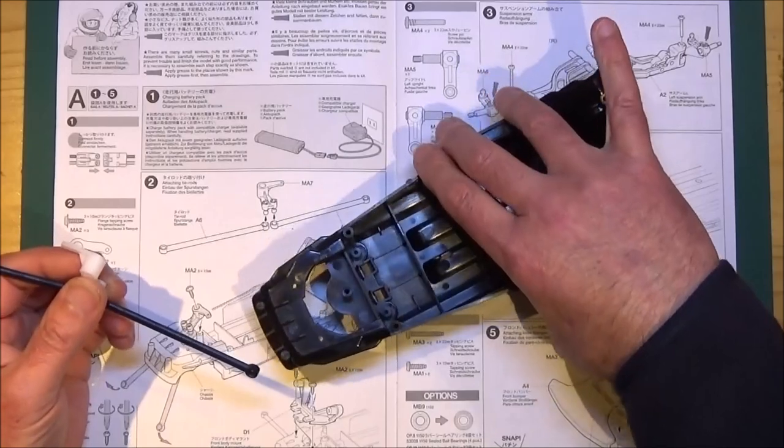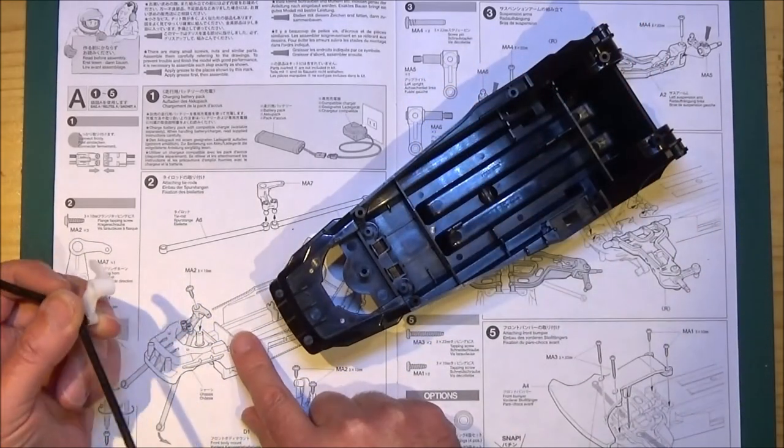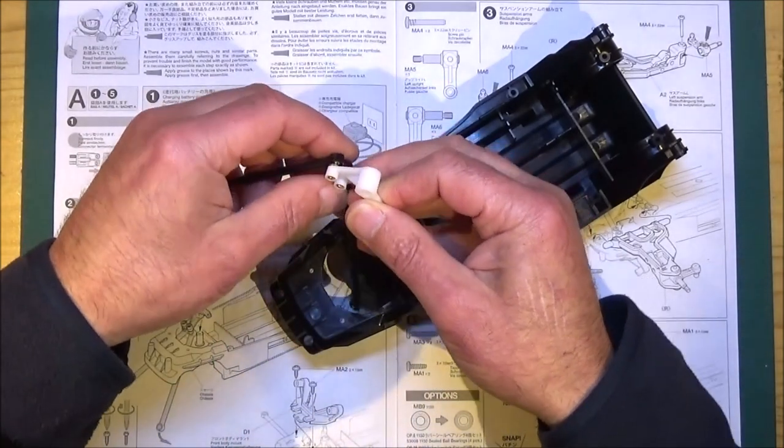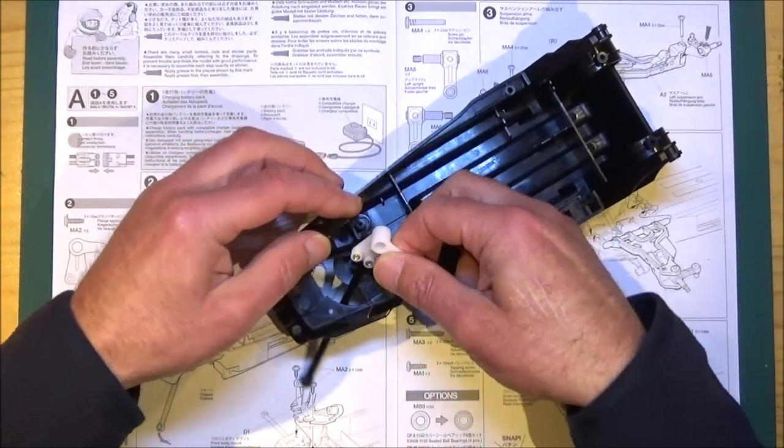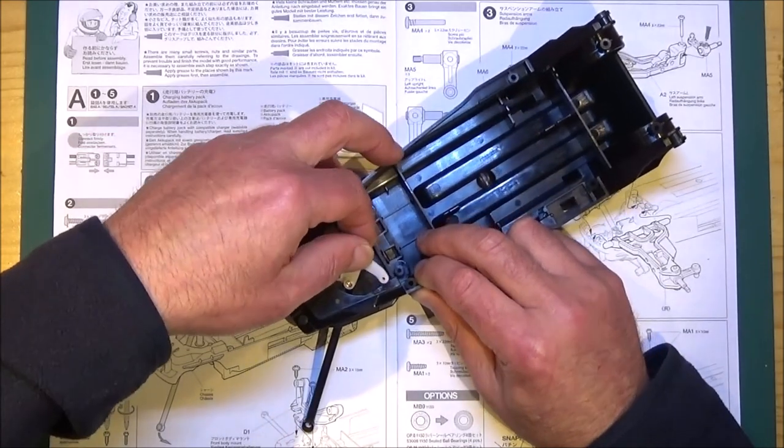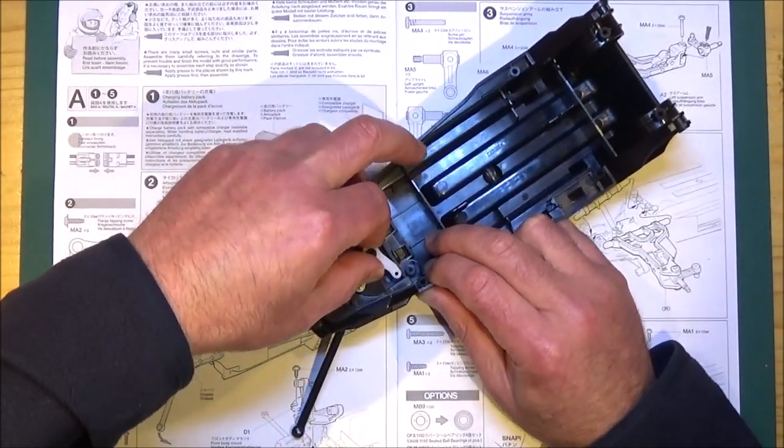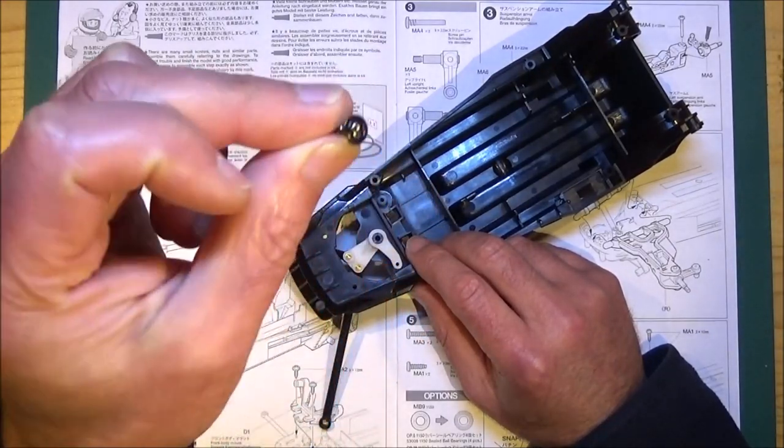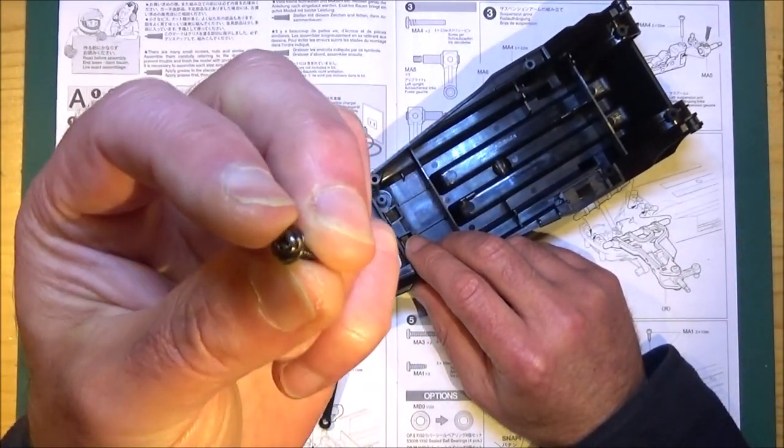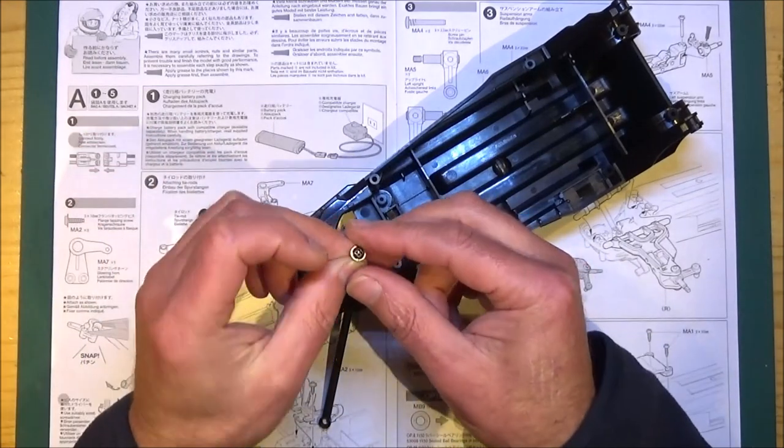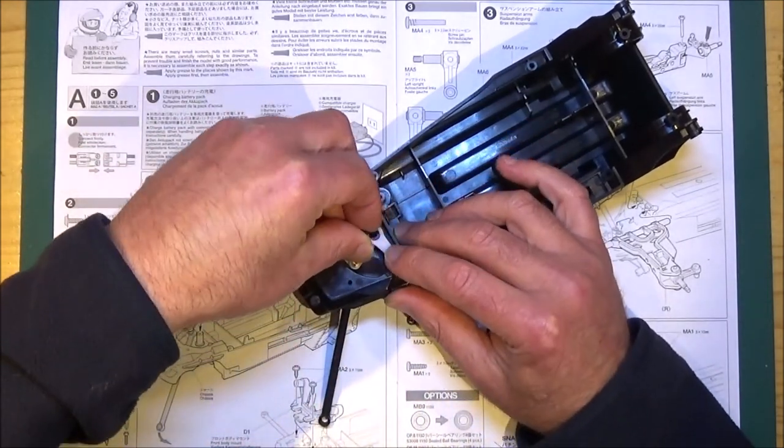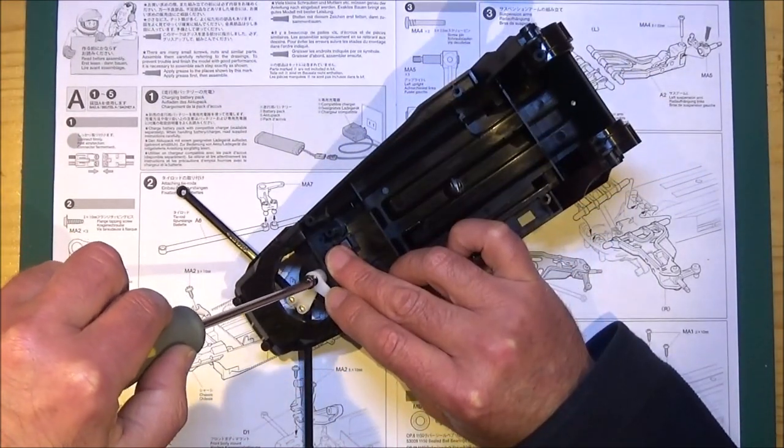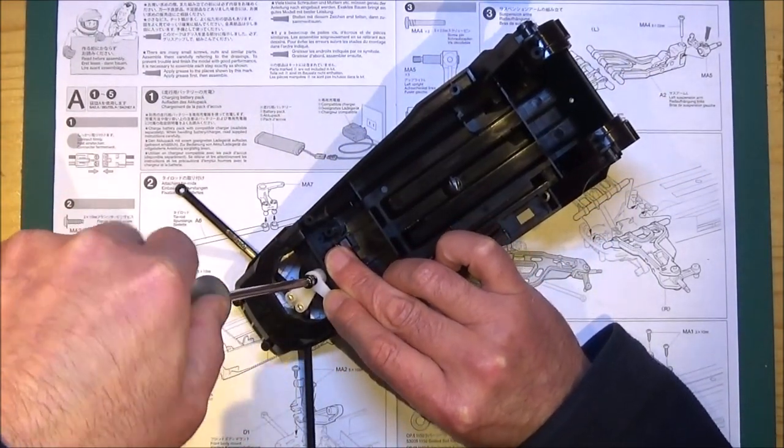Then we need our chassis. Following the orientation of the diagram, tip that over and push the arms through the hole. Then you just need this 3x2 screw with a washer built in, and it just goes in there.